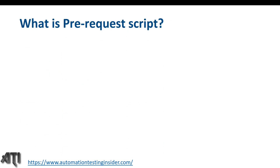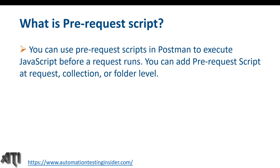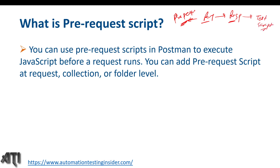So what is pre-request script? The name says it itself — pre-request script is the script that runs before the request starts, before we proceed with the actual HTTP request. You can use pre-request scripts in Postman to execute JavaScript before a request runs. So there is a request — when we put the request we get some response. The pre-request script is placed before the actual request starts, and once we get the response, we put the test script.